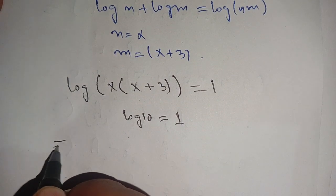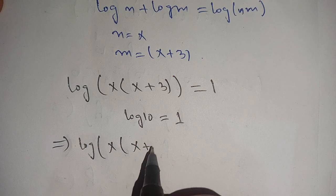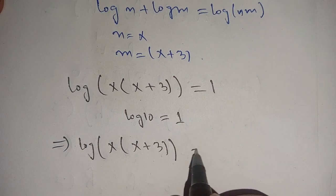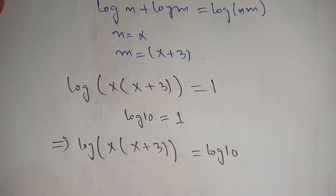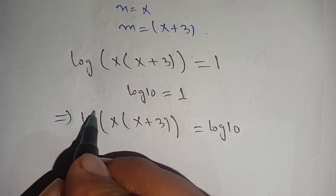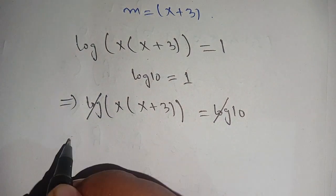In place of 1 we substitute log of 10 and we get log of x times x plus 3 is equal to log of 10. Now from left hand side as well as from right hand side we can cancel out the logs and we get x times x plus 3 is equal to 10.